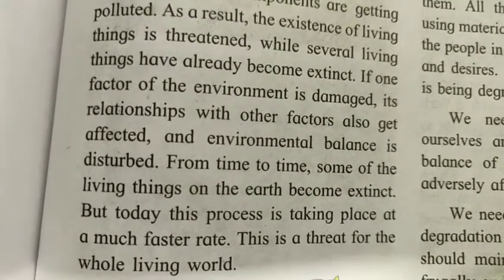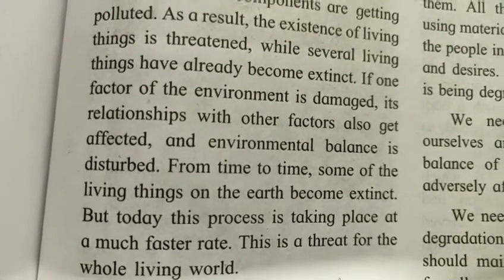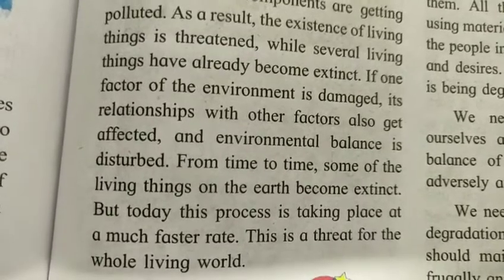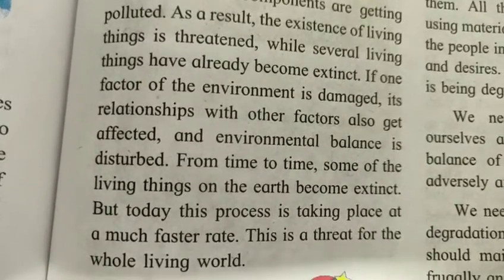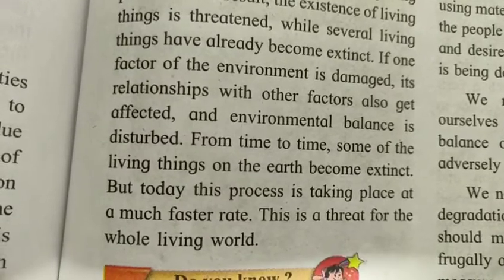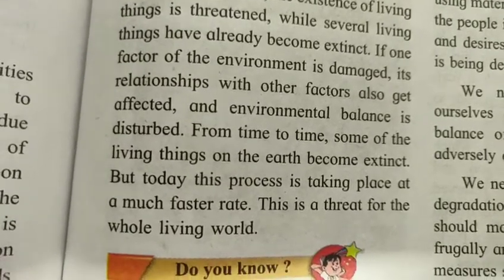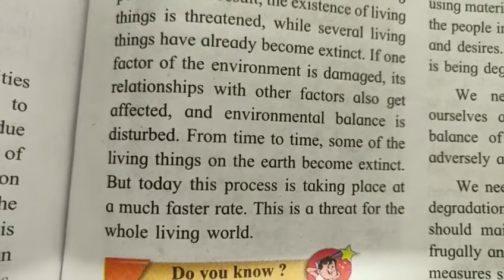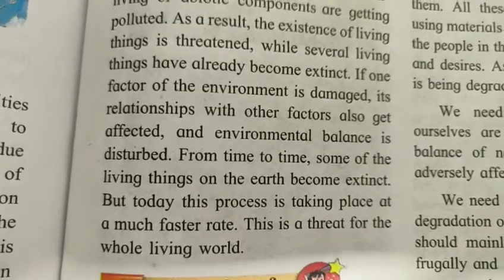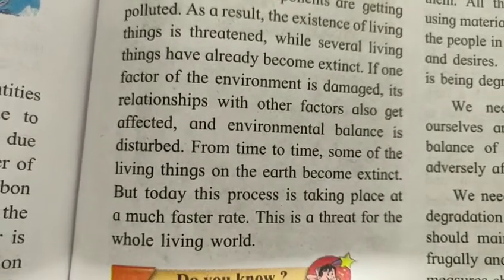Sometimes it's raining, sometimes it's very warm, very hot — there is no fixed weather, unlike how it was 20 years back. If one factor of the environment is damaged, its relationship with other factors also gets affected, and the environmental balance is disturbed. They are all linked to each other.